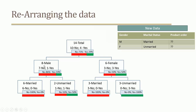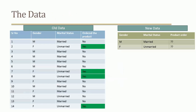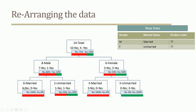Now let's go back to the 8 male customers and further segment by marital status. Within 8 males, there are 6 married and 2 unmarried. Out of 6 married males, all 6 did not order — nobody ordered. So the no percentage within married males is 100%.